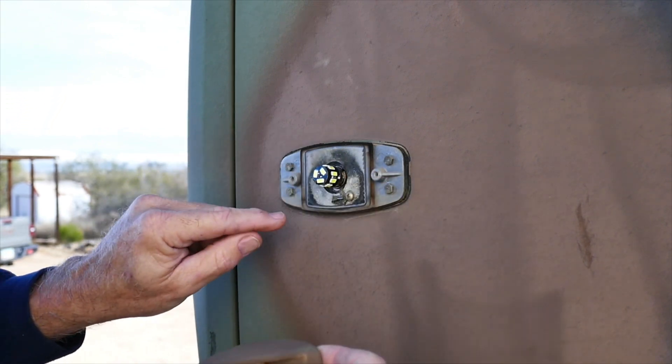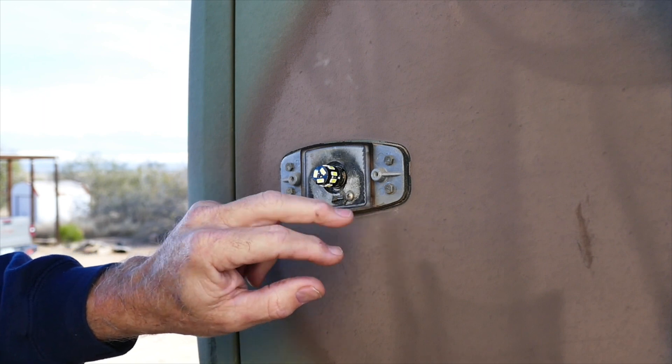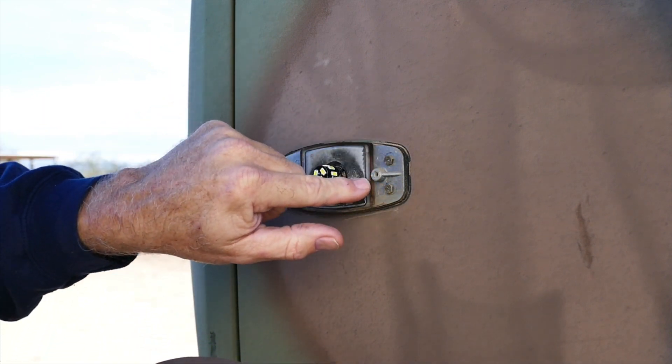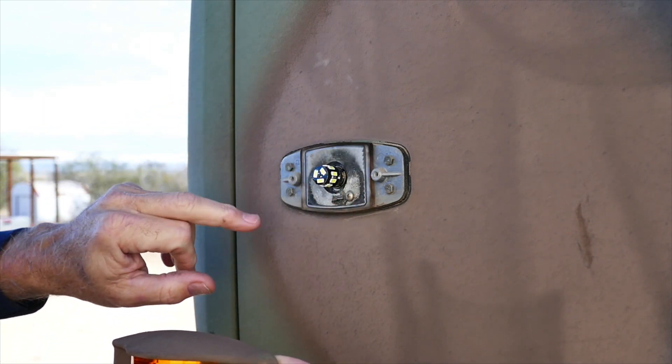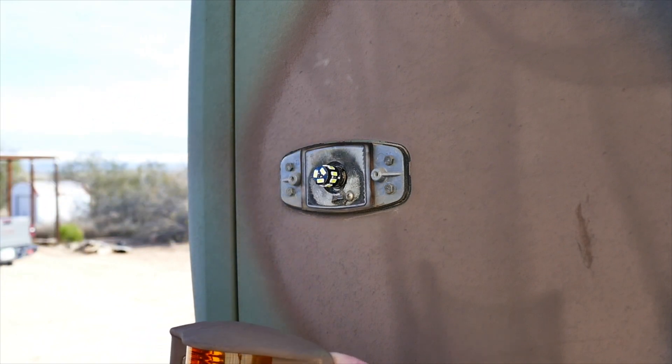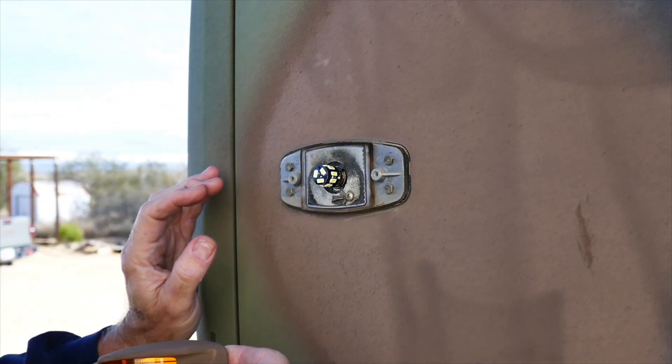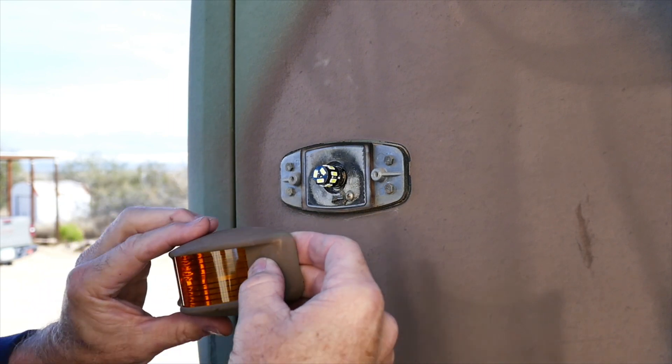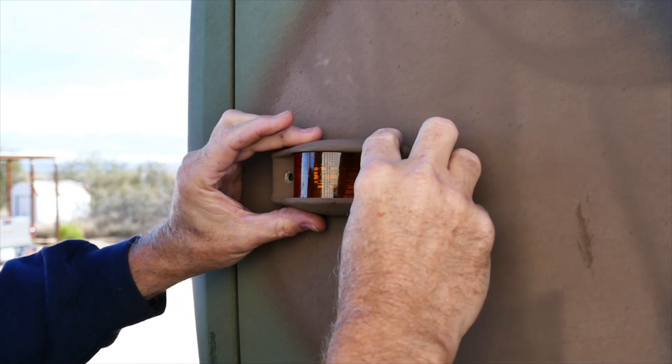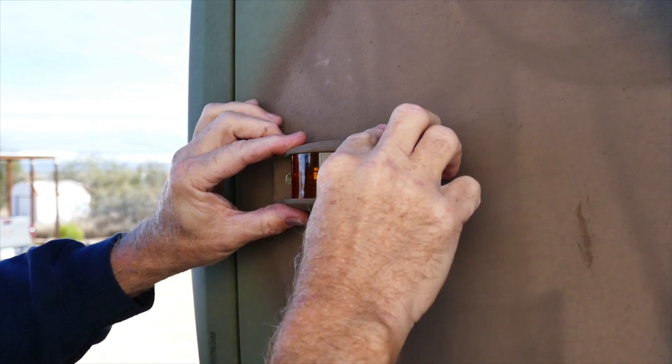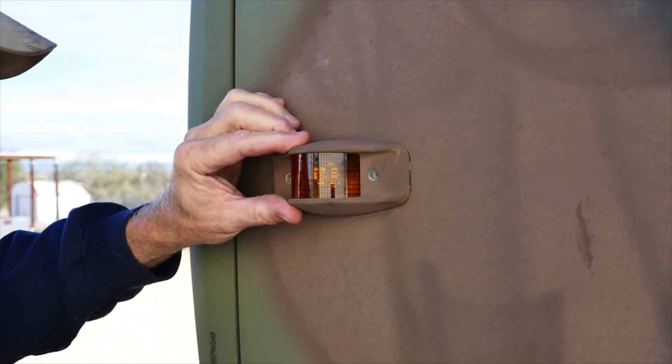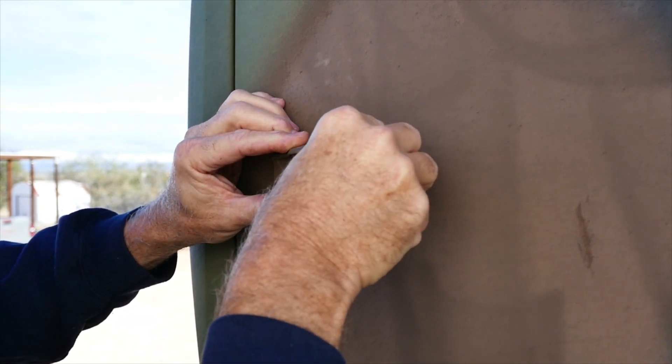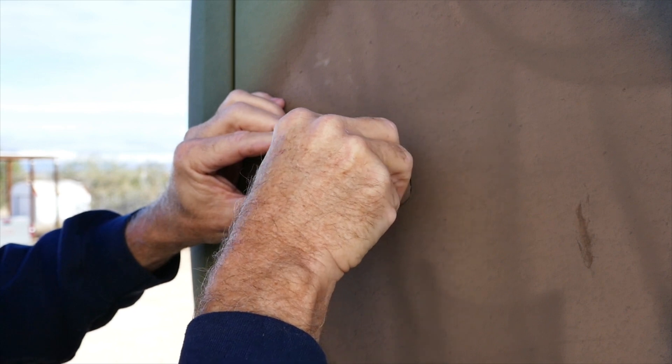We're going to insert the new lens. Now there's a gasket here, so this lens goes up against this rubber gasket. It's in pretty good shape. If it wasn't, then what I would be doing is silicone or something, but you don't want a bunch of junk getting in your lights.